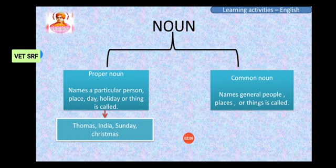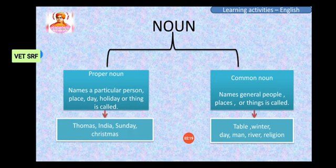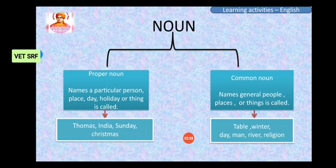Next, common noun. Common noun is nothing but a name we commonly use, and that is called common noun. For example, river. In our country, we have many rivers but we commonly say 'river.' If you want to particularly mention the name of the river, for example Ganga river, that is called proper noun. Commonly saying 'river' is called common noun.